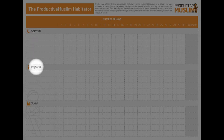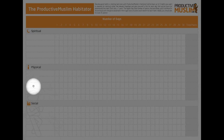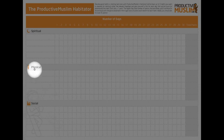The second type of habits to develop is physical habits. For example, exercising every single day, maybe jogging, making sure that you eat breakfast every single day, making sure you don't eat dinner past 7 p.m. every single day. These are habits which will help you improve your physical productivity and become much more physically productive, inshallah.